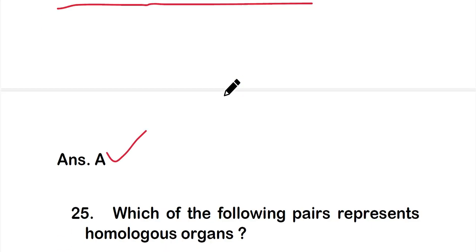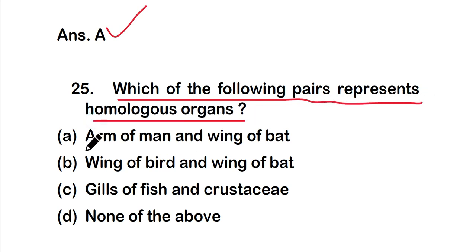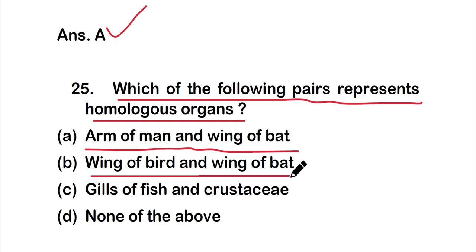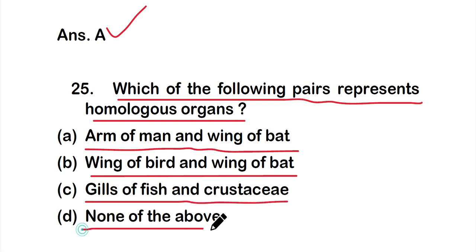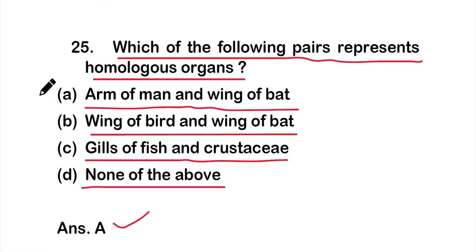Question number 25: Which of the following pairs represent homologous organs? Option A: arm of man and wing of bat, option B: wing of bird and wing of bat, option C: gills of fish and crustacea, or option D: none of the above. The correct answer is option A — arm of man and wing of bat are homologous organs.